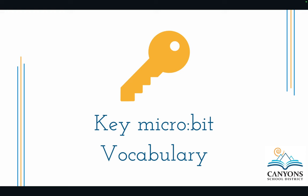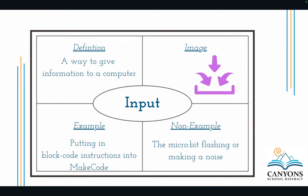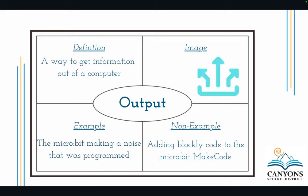Some key vocabulary for the micro:bit: Input is a way to give information to a computer — for example, putting block code instructions into MakeCode. Output is how to get the information out of the computer — so you may program it to make a noise, and the output is that noise actually happening.